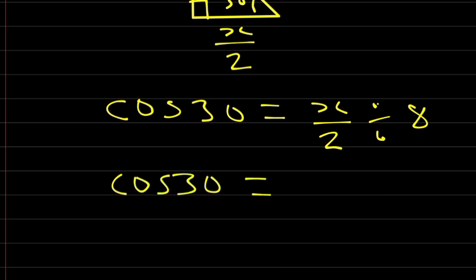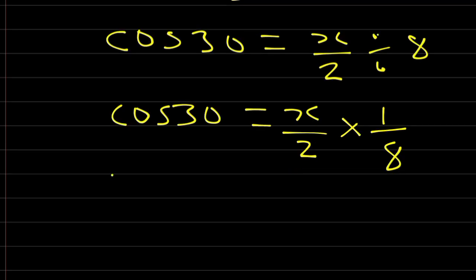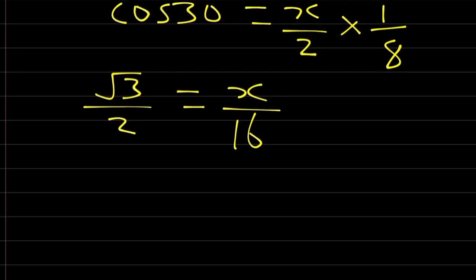Cos 30 is equal to adjacent X over 2 divided by hypotenuse 8. Therefore, cos 30 is equal to X over 2 times 1 over 8. Cos 30 is actually root 3 over 2. So, root 3 over 2 is equal to X over 16. 2 times 8 is 16. X times 1 is X. Let's cross multiply or multiply both sides by 16.